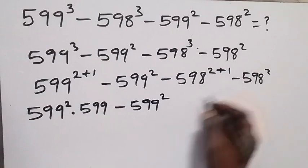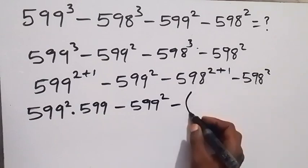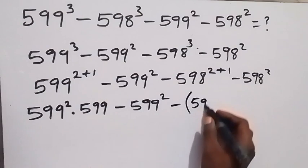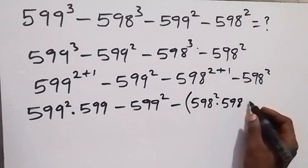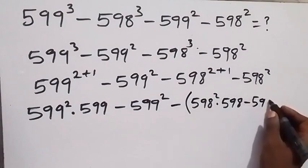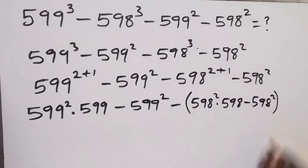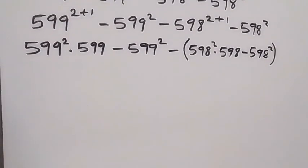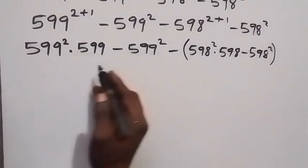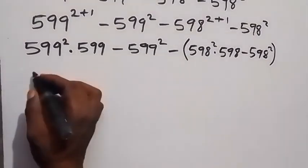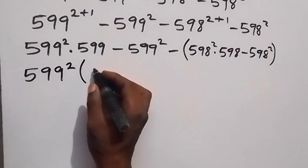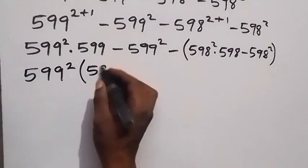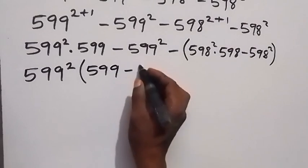Here as well we can separate it — let's bring the minus out: minus bracket 5^98 squared then minus 5^98 squared. In the next step we factor. What is coming out from here: we have 5^99 squared common, let's bring it out. This becomes 5^99 squared, then in the bracket what is left: 5^99, then what is left here, minus 1.